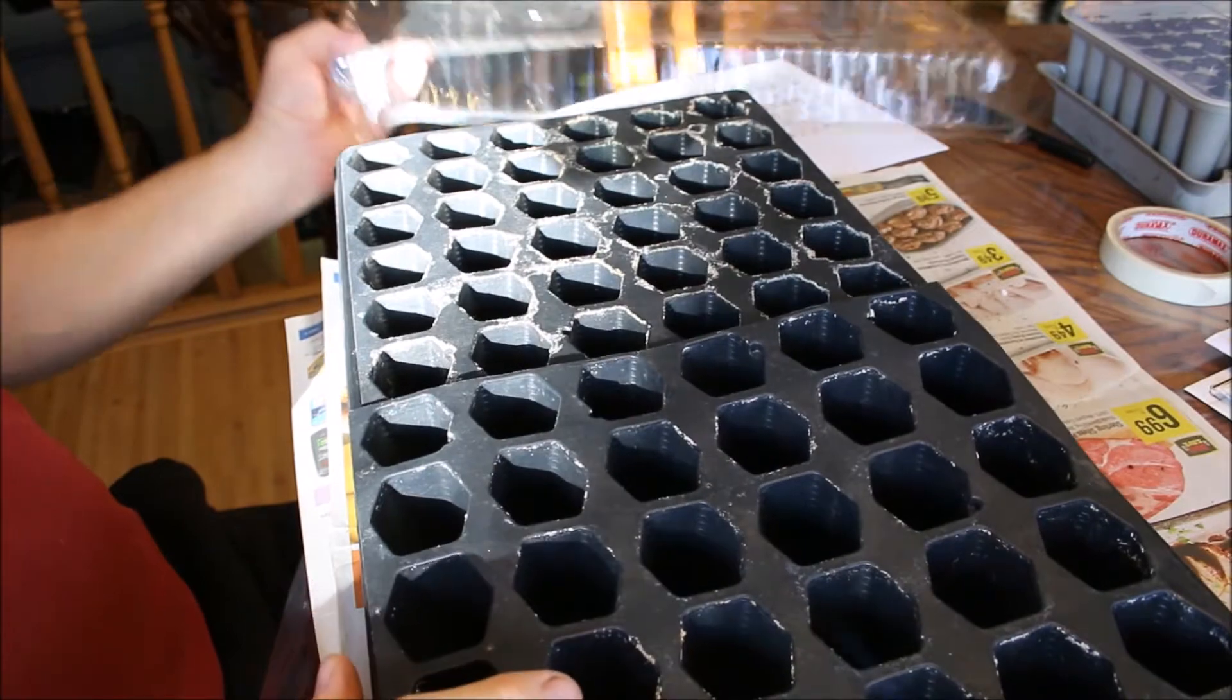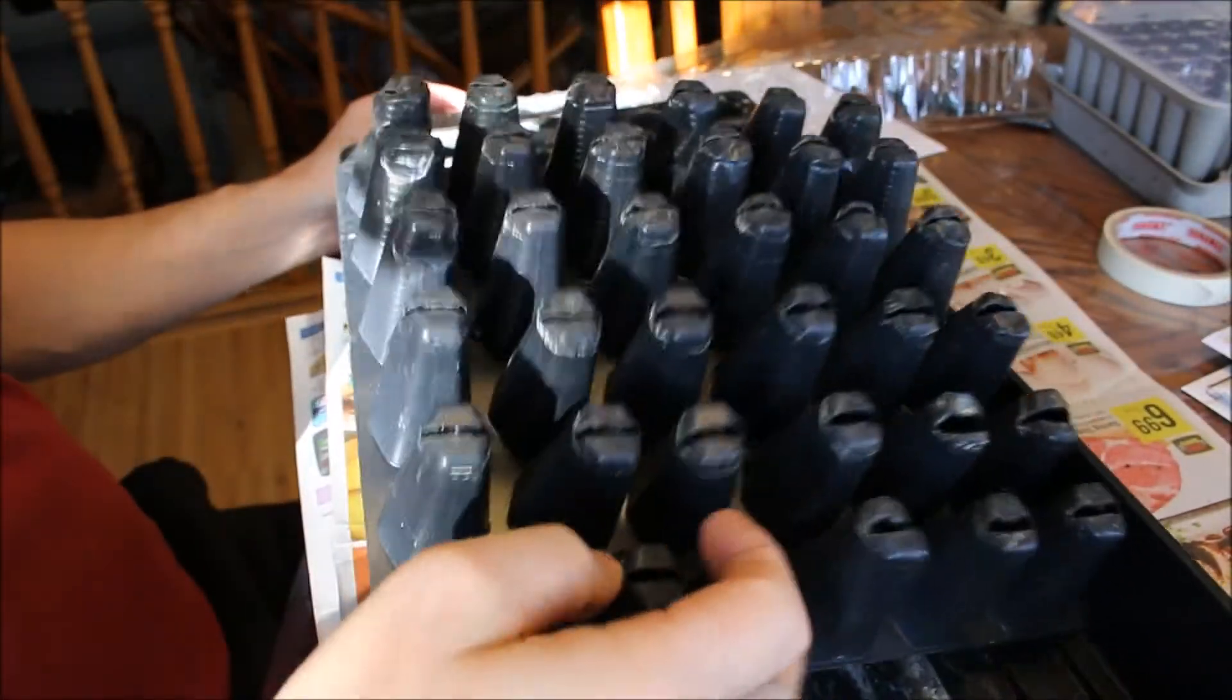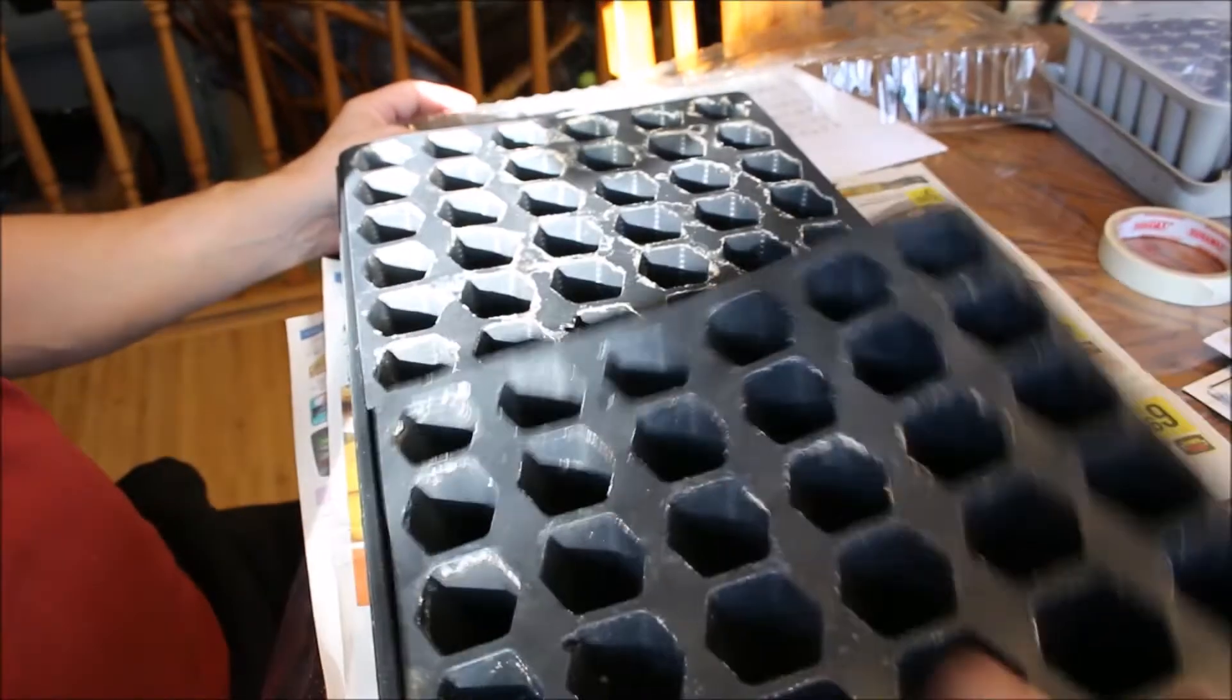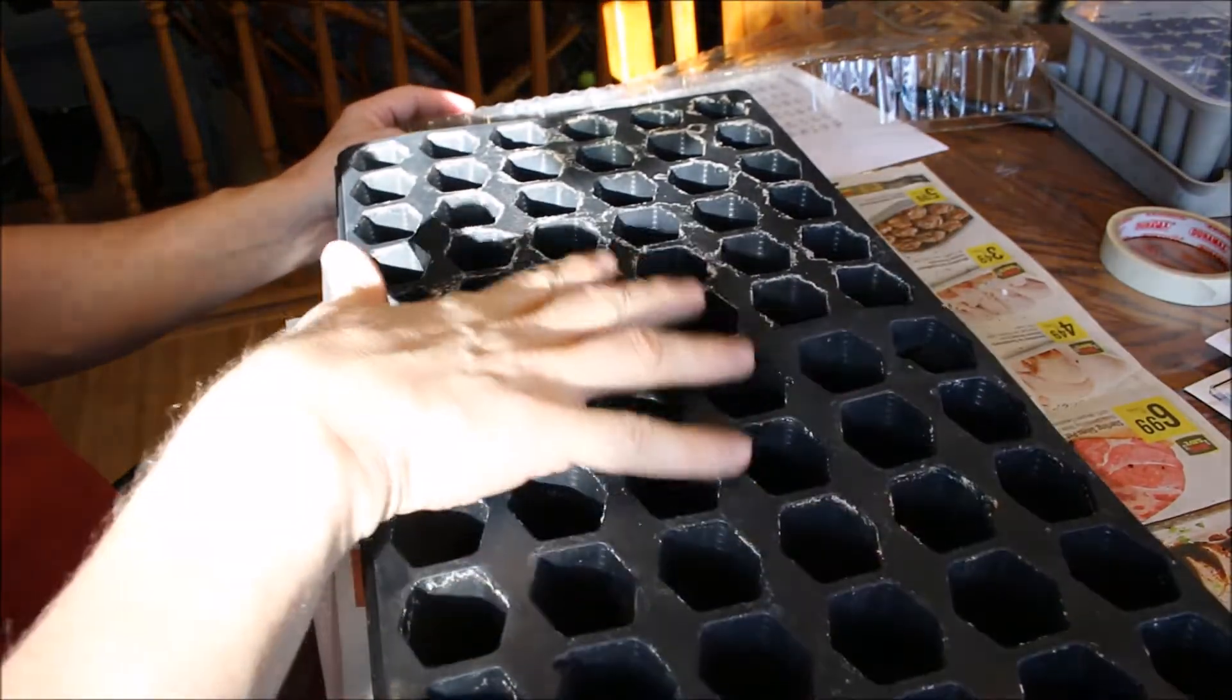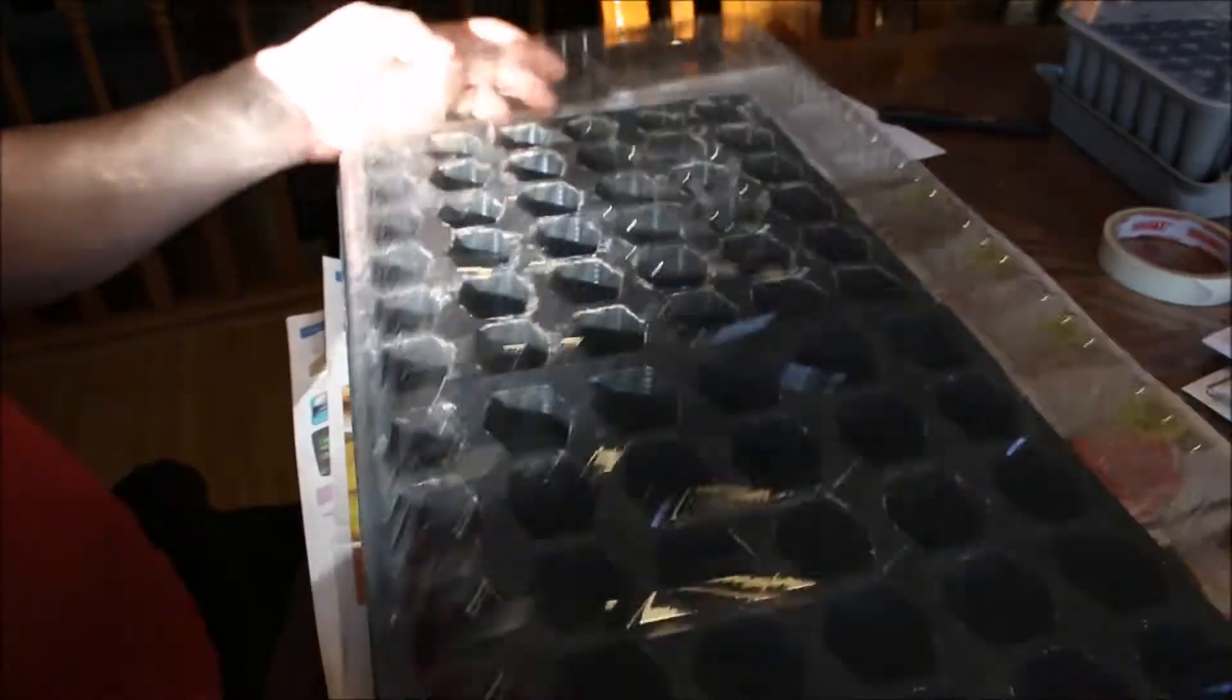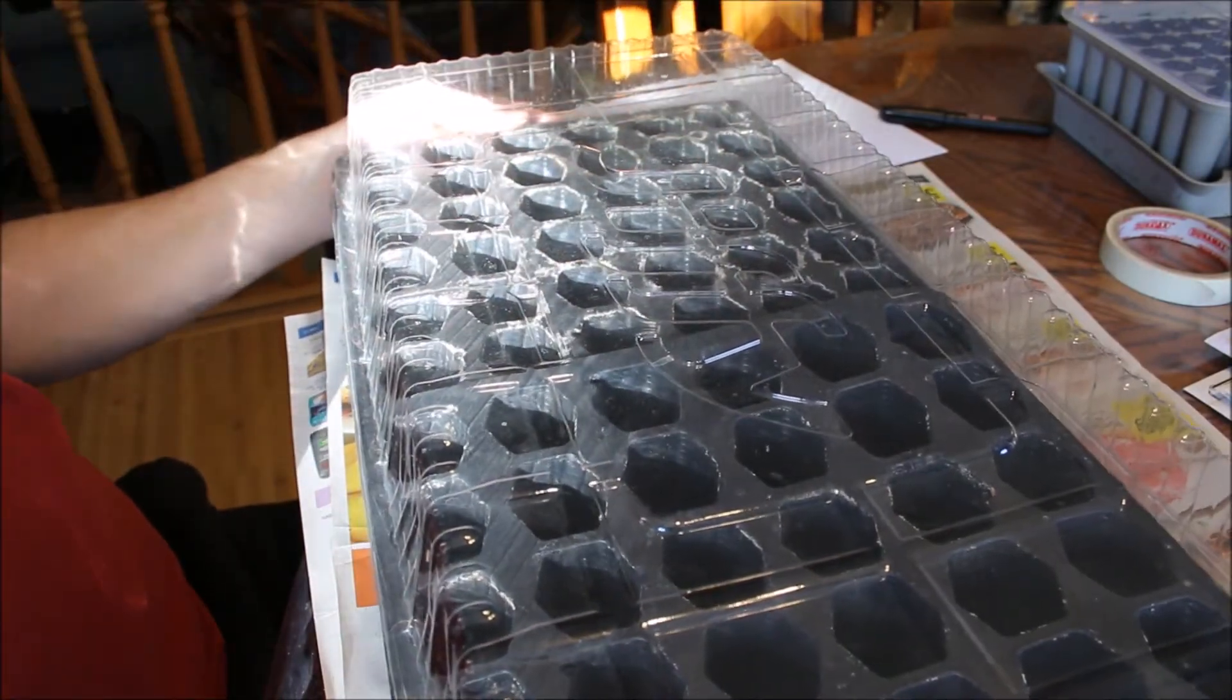If you're using a propagator such as this, it would be generally the same idea. You'd fill these up—you can see that there's holes in the bottom. Plant your seeds, fill your tray with water to allow it to water from the bottom, place your dome on, and that's the same. So whatever method you're using will work the same.